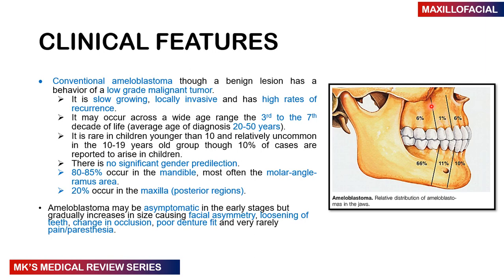Symptoms include facial asymmetry from the slowly growing lesion, loosening of teeth, changing occlusion where teeth don't meet properly, poor denture fit. Very rarely, patients may have pain and paresthesia. When pain and paresthesia are present, this indicates either an infection or that the tumor has spread to involve or compress nerves.